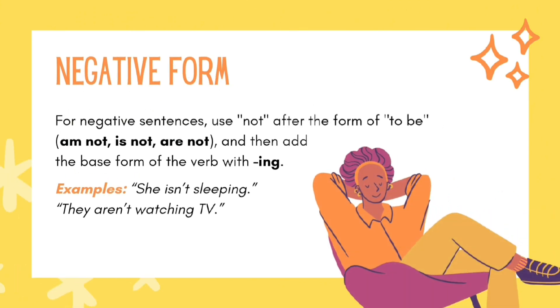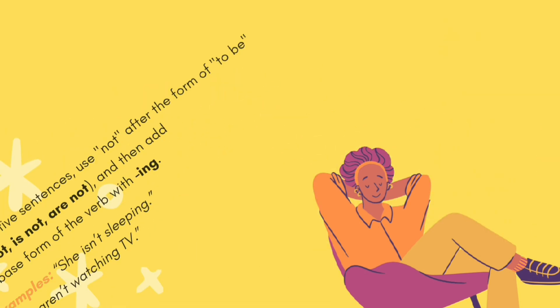Negative form: For negative sentences, use not after the form of to be — am not, is not, are not — and then add the base form of the verb with -ing. Examples: She isn't sleeping. They aren't watching TV.